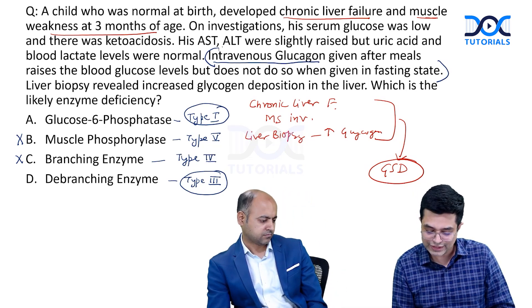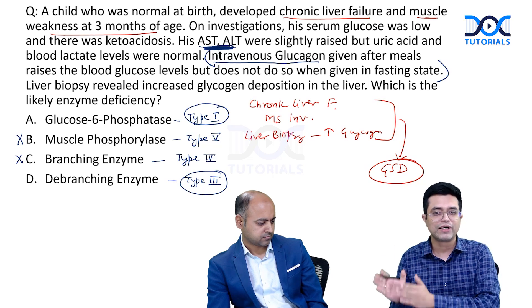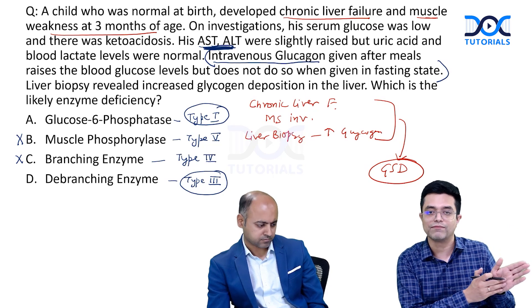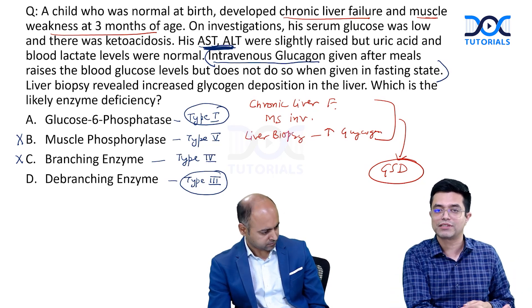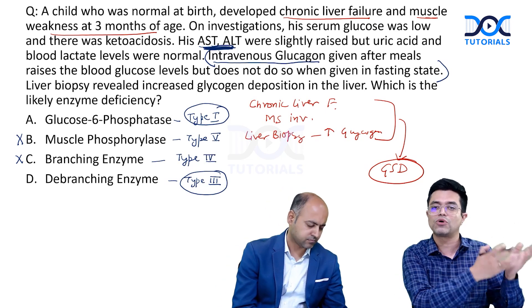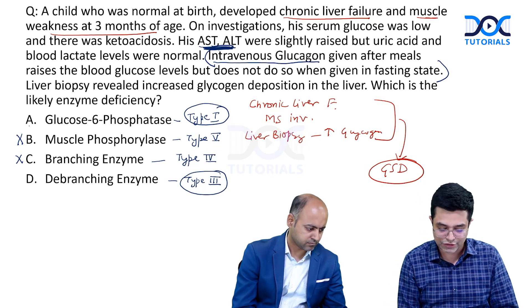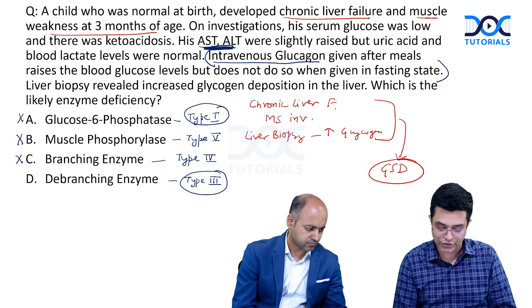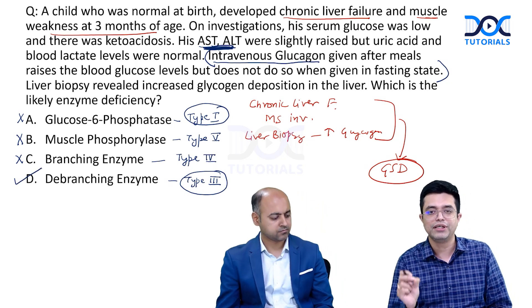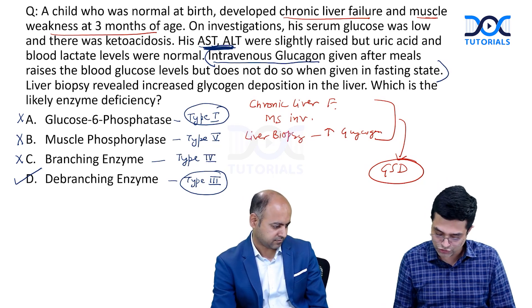Additionally, AST and ALT elevation is significantly more common in Type 3, whereas they are normal in Type 1. Type 1 typically presents with hyperuricemia and a gout-like presentation, plus lactic acidosis — none of which are mentioned here. Therefore, it is not glucose-6-phosphatase deficiency. The answer is debranching enzyme deficiency — the diagnosis is Type 3 glycogen storage disorder.